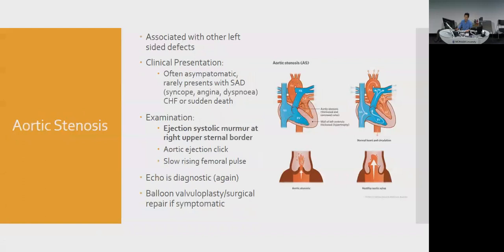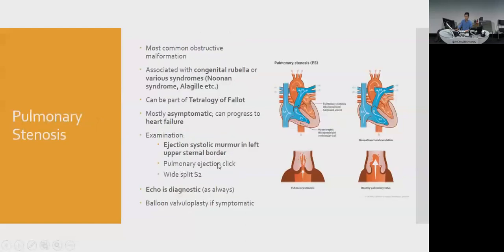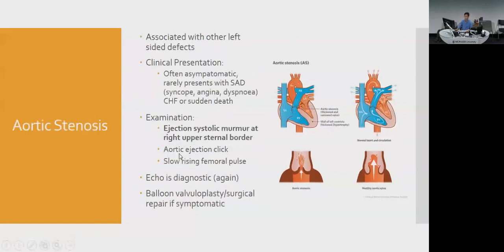Aortic stenosis in children is similar to adults, but caused by unicuspid or bicuspid valves rather than age-related degeneration. Often asymptomatic, but can present with the SAD triad: syncope, angina, dyspnea. There's an ejection systolic murmur in the aortic region. Importantly, both aortic and pulmonary stenosis can produce an ejection click — the stiff valve clicks open when blood forces through. Aortic stenosis can also cause a slow-rising femoral pulse. Echo and balloon valvuloplasty if needed.